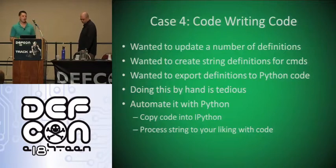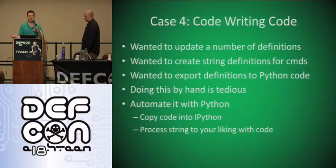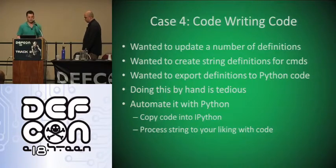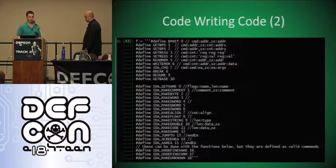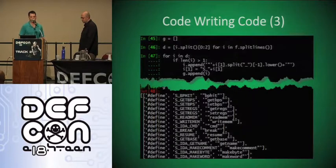The next case is code-writing-code — something I don't see emphasized enough in software development. The idea is to write small scripts that write C code or Python code for you. This generally entails writing definitions for commands or messages so you don't have to write them all by hand, avoiding typos, and being able to reuse the script later. In this case I had all these definitions I wanted to export to Python and create string definitions for — a lot of data entry I'd rather avoid. I used iPython to process all the lines.